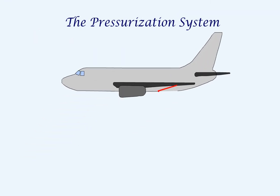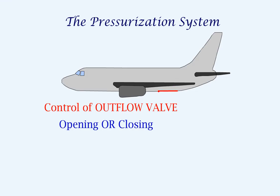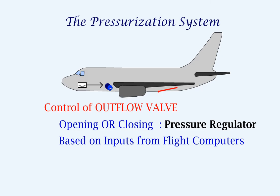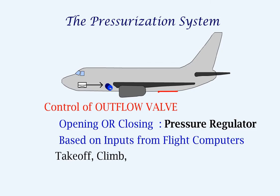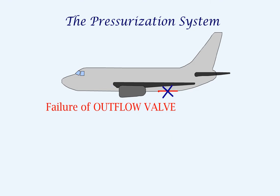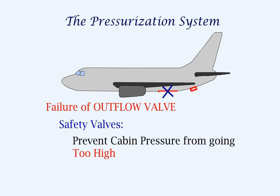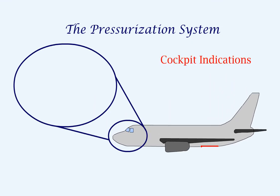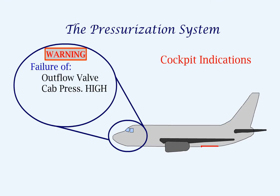The control of the outflow valve — that is, the opening or closing — is done by a pressure regulator. The movement is based on inputs from the flight computers that give information about takeoff, climb, cruise, descend, and landing. In case of failure of the outflow valve, there are safety valves which will prevent the cabin pressure from going too high or going below the ambient pressure. In the cockpit, indications are given in case of failure of the outflow valve, the cabin pressure being too high or too low, or the failure of the regulator.